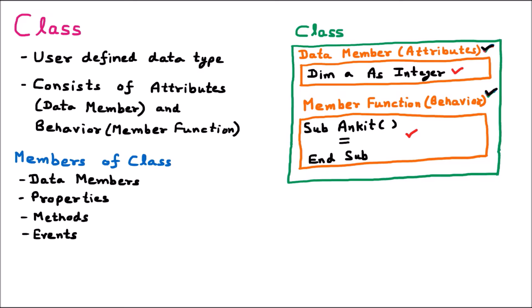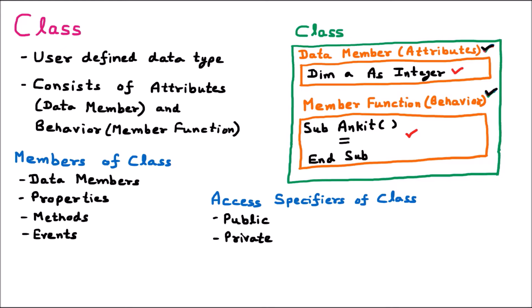Now, how can we access this class? There are many restrictions we can provide on the class, and these are called access specifiers. The first is public — if you want your class to be accessible to everybody, you make it public. The second is private — the class is only accessible inside the code where it is created. The third is protected — only a derived class, which is inheriting the class, can access it.